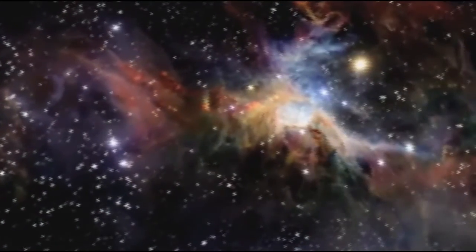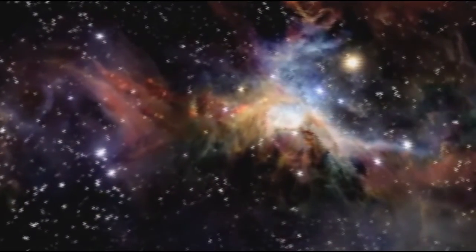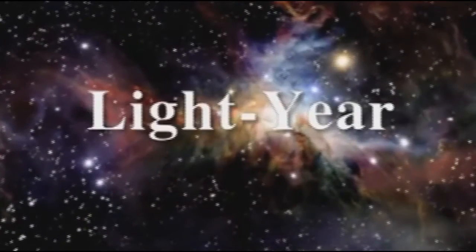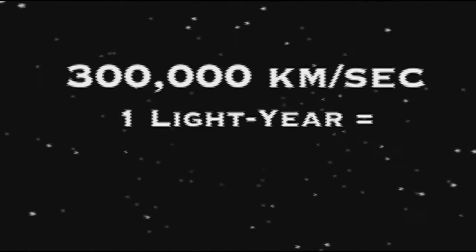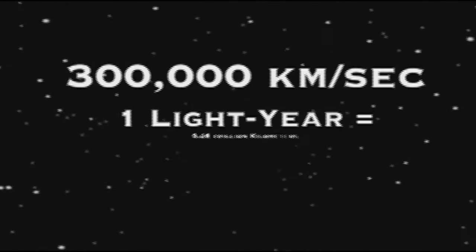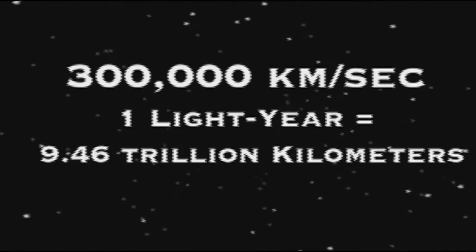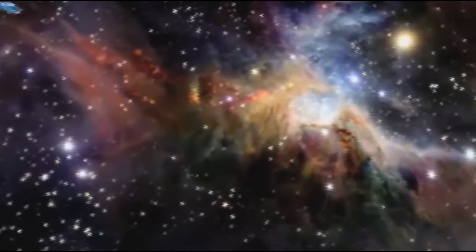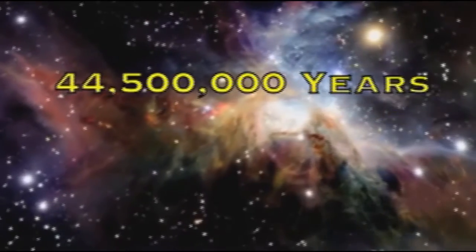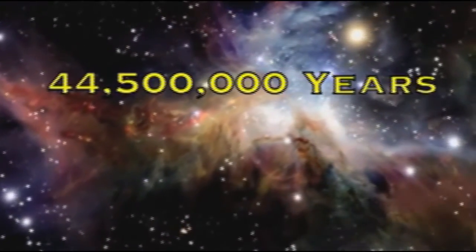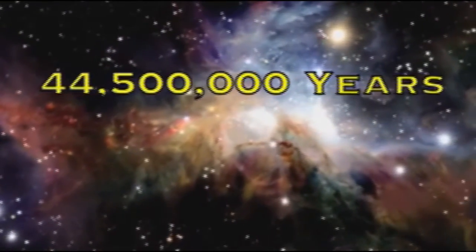Did you know that distances in space are measured in units called light years? A light year is defined as the distance light travels in one year. Since light travels at 300,000 kilometers per second, one light year is equal to 9.46 trillion kilometers. Driving a car at that distance of 60 miles per hour would take 44.5 million years. Now you know.